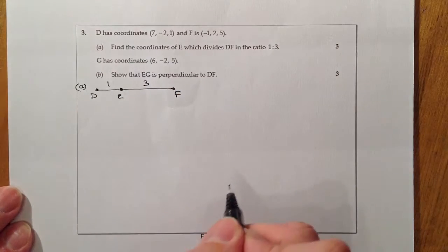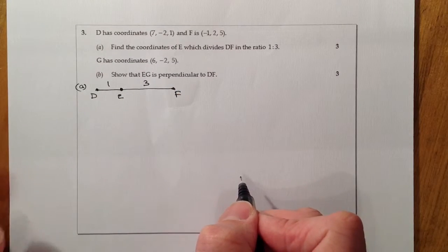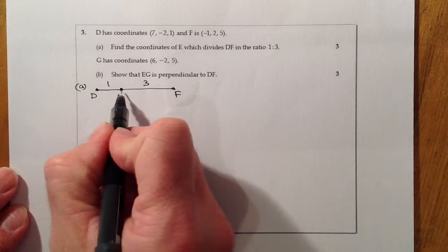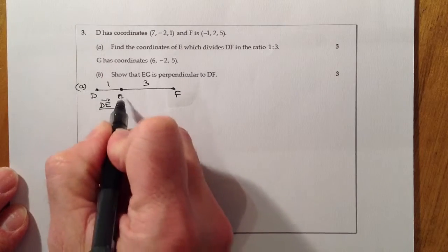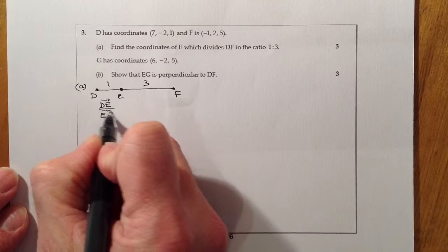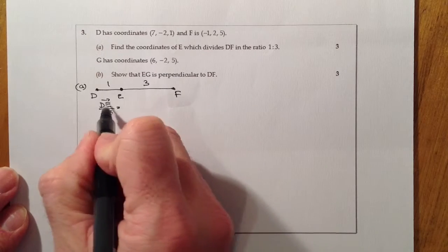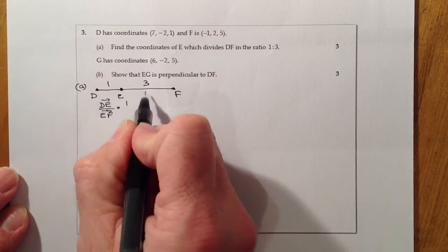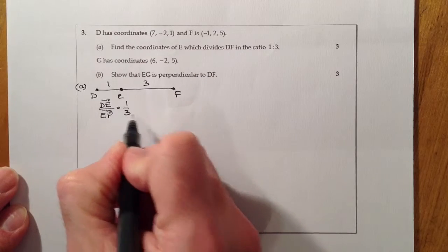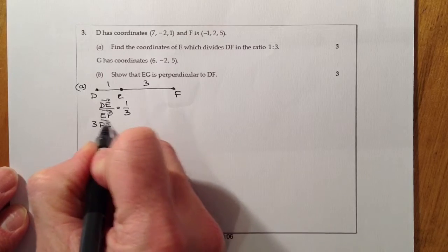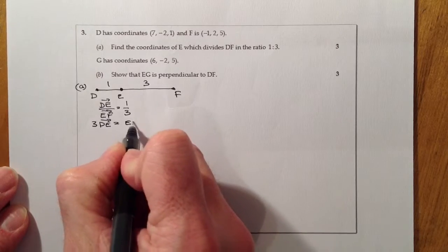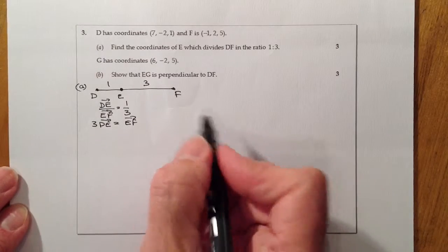The way I would start is looking at DE divided by EF going in the same direction, and that equals 1 over 3. Then I cross multiply, so three DE is going to equal one EF.